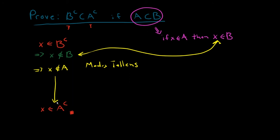Any time I want to prove a set containment — this is just one of them — you want to start in the first set (in this case B complement) and finish in the second (in this case A complement). You can use your definitions of what it means to be a complement, and you can use your assumption (in this case A is contained in B), to make your proof happen.